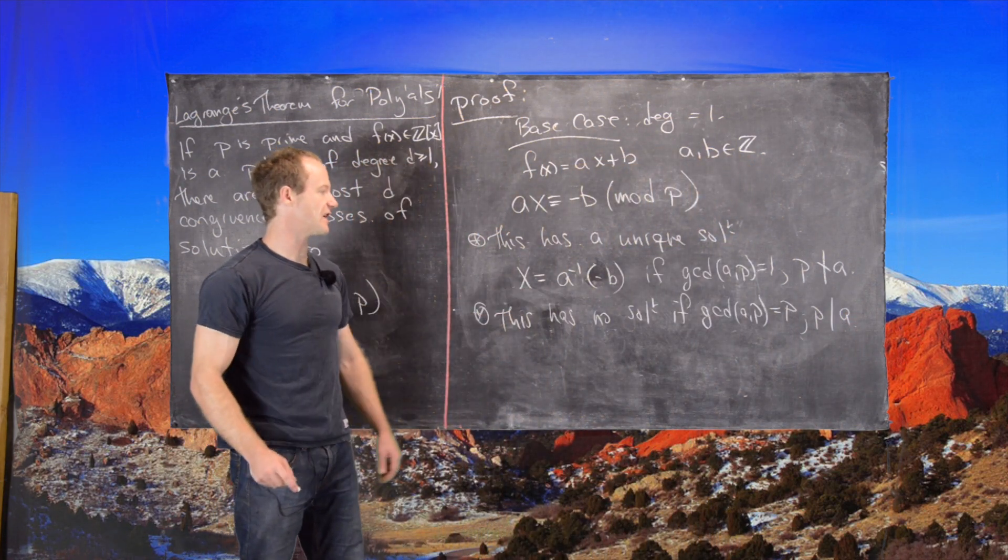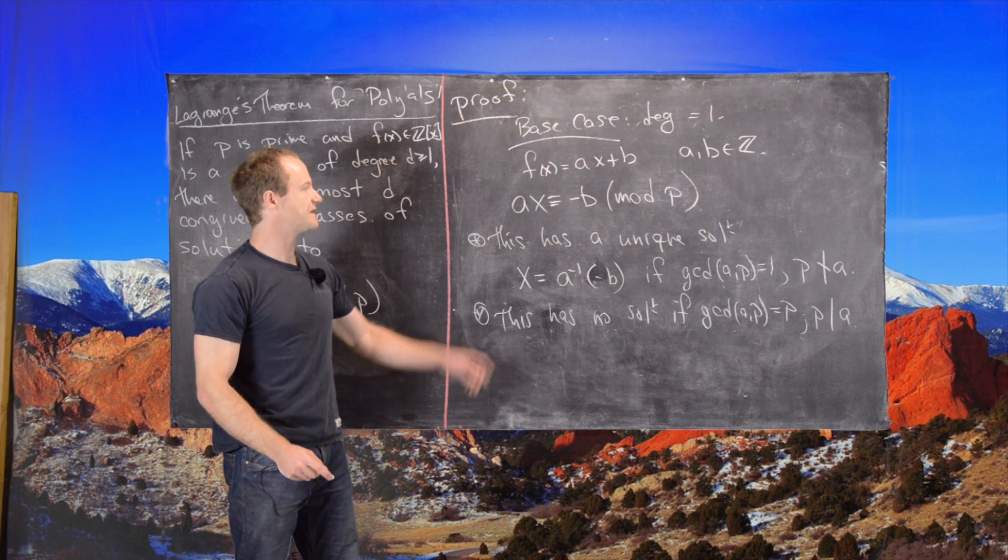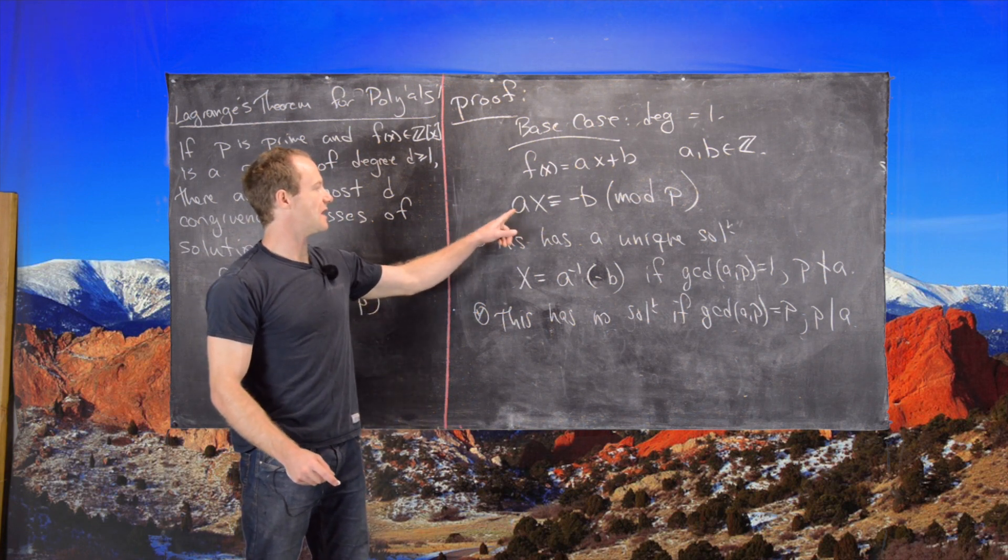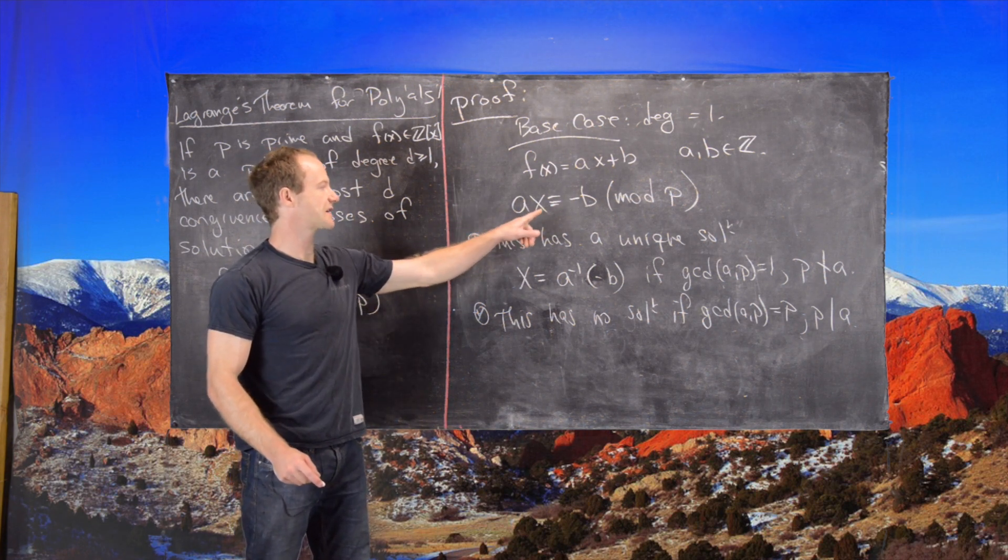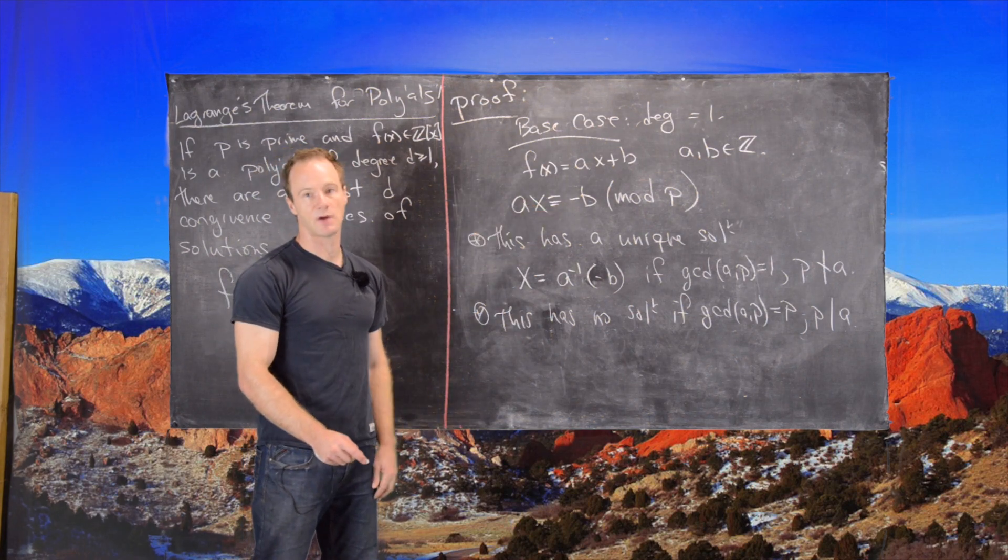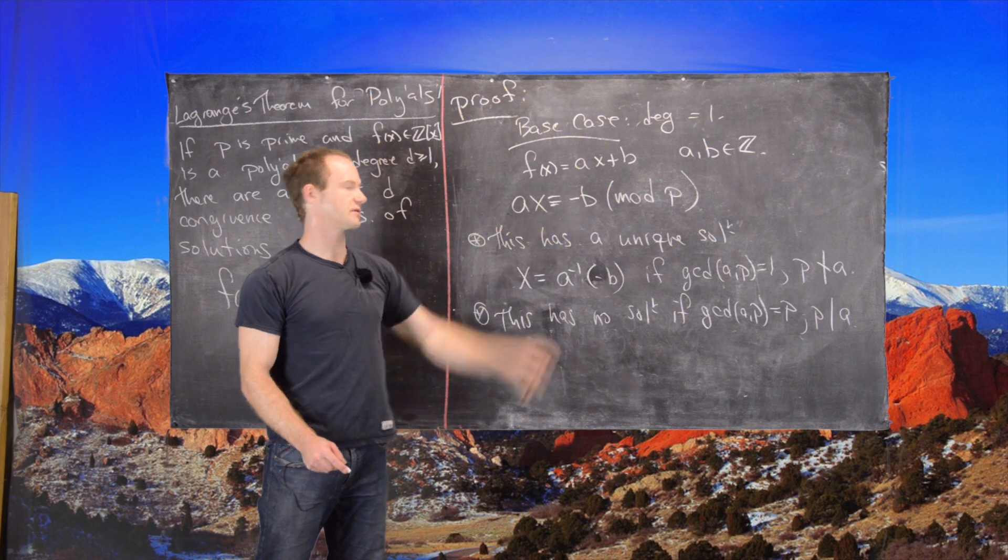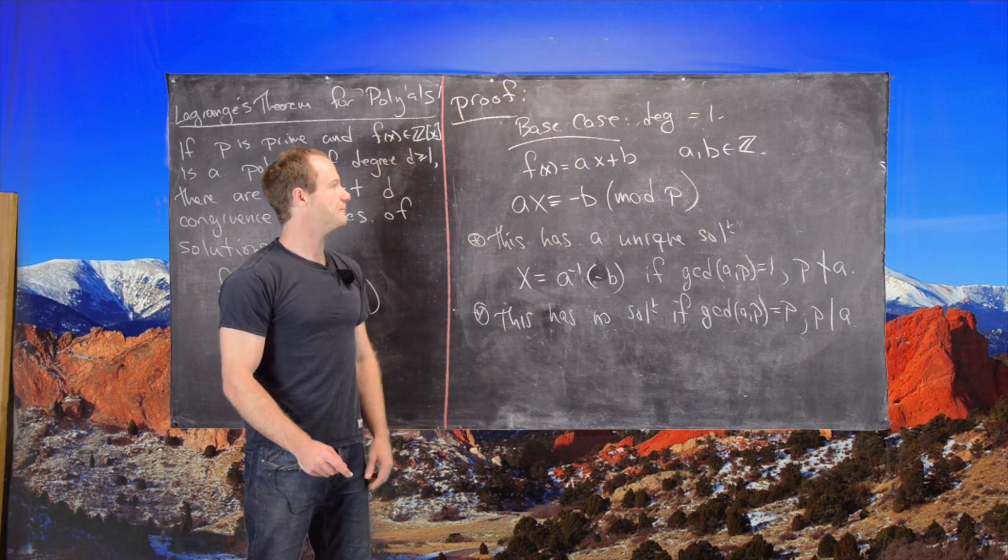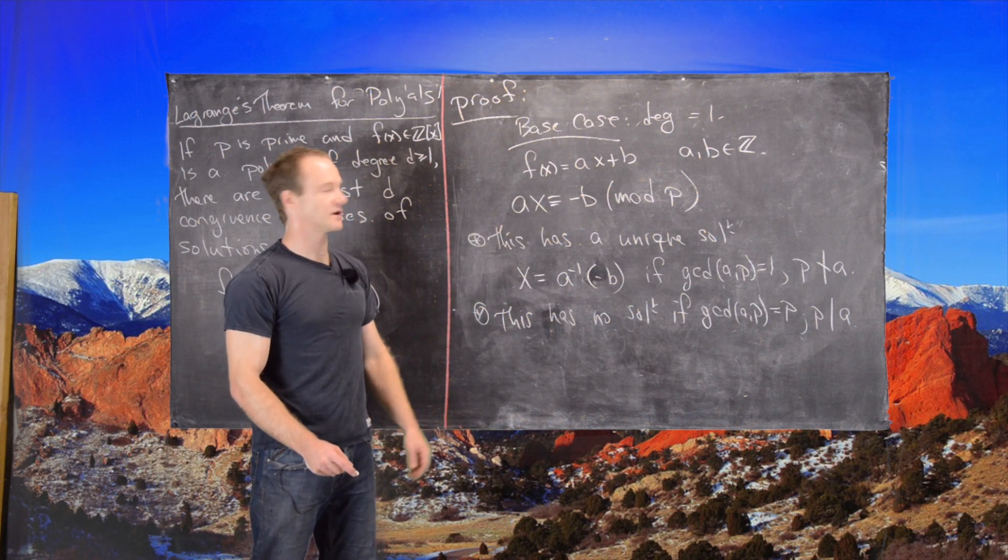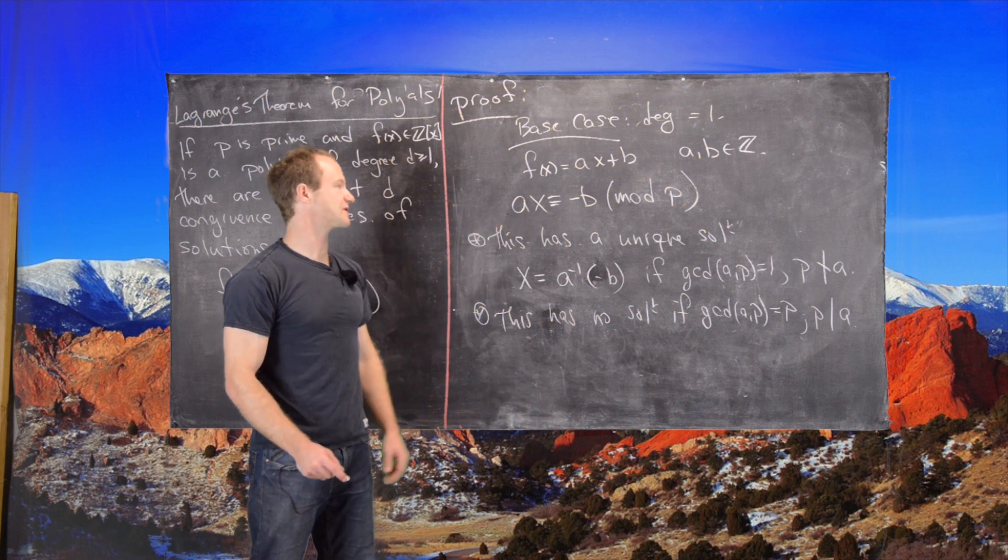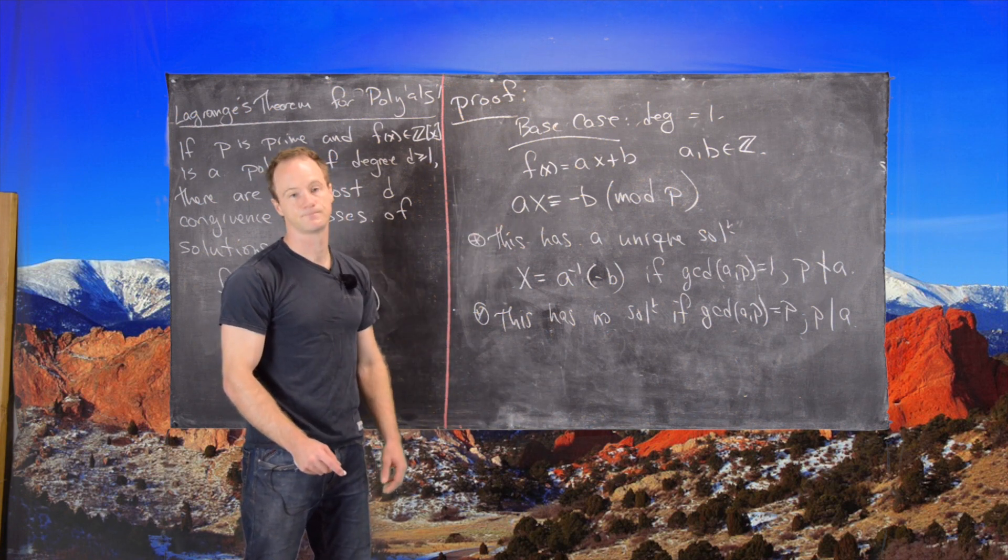We can very easily see that if P divides A, then we have PX is congruent to negative B mod P. But notice that this part is equal to 0, which is congruent to negative B. But there's no solution to that unless B was also equal to 0.